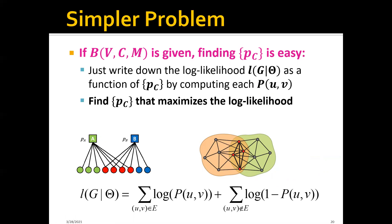So this is easy because we just need to write down the log likelihood as a function of PC by computing each term of P(u,v), and then we can find the PC that maximizes the log likelihood.